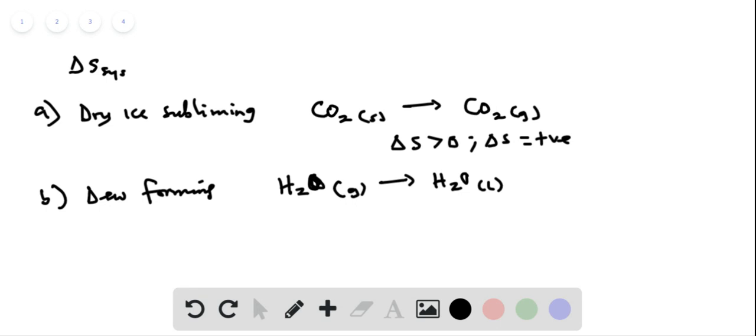So here the entropy is decreasing because we are going from gas, a more disordered system, to liquid, a relatively more ordered system. So here the delta S of the system is less than zero, that means that delta S of the system is negative.